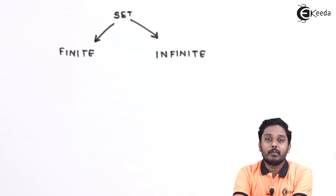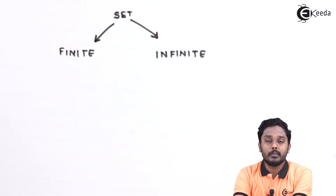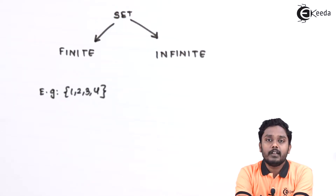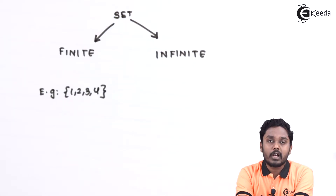A set is initially either finite or infinite. An example of a finite set would be just 3 or 4 numbers like {1, 2, 3, 4}. An infinite set could be either countably infinite or uncountably infinite.